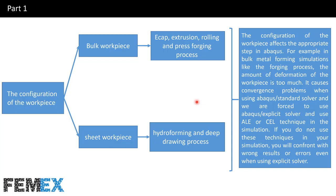When a workpiece is deformed, its elements are deformed too. If the deformation of the elements exceeds a special index, the obtained results are wrong or the error is considerable. We are therefore forced to use ALE or CEL techniques in simulations like press-forging.